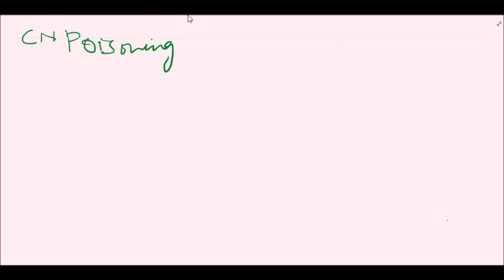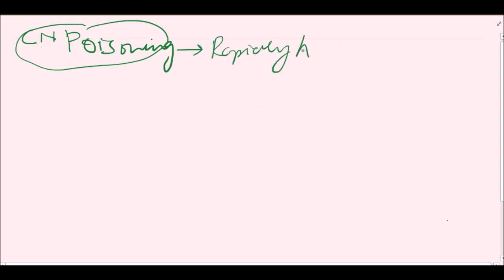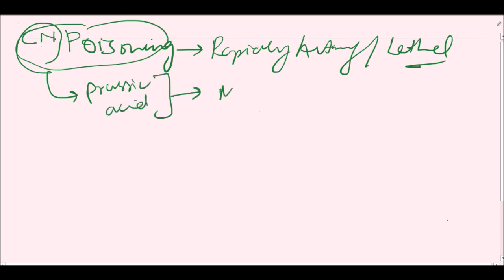Hello everyone, welcome to Forensic Extract. Today we will discuss cyanide poisoning. Cyanide is a rapidly acting lethal substance, very lethal even in very small quantities. Cyanide is also known as prussic acid, and it is used in manufacturing of Prussian blue.